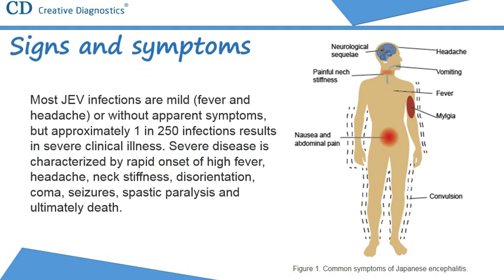Most Japanese encephalitis virus infections are mild, with fever and headache, or without apparent symptoms, but approximately 1 in 250 infections results in severe clinical illness. Severe disease is characterized by rapid onset of high fever, headache, neck stiffness, disorientation, coma, seizures, spastic paralysis and ultimately death. The case fatality rate can be as high as 30% among those with disease symptoms.